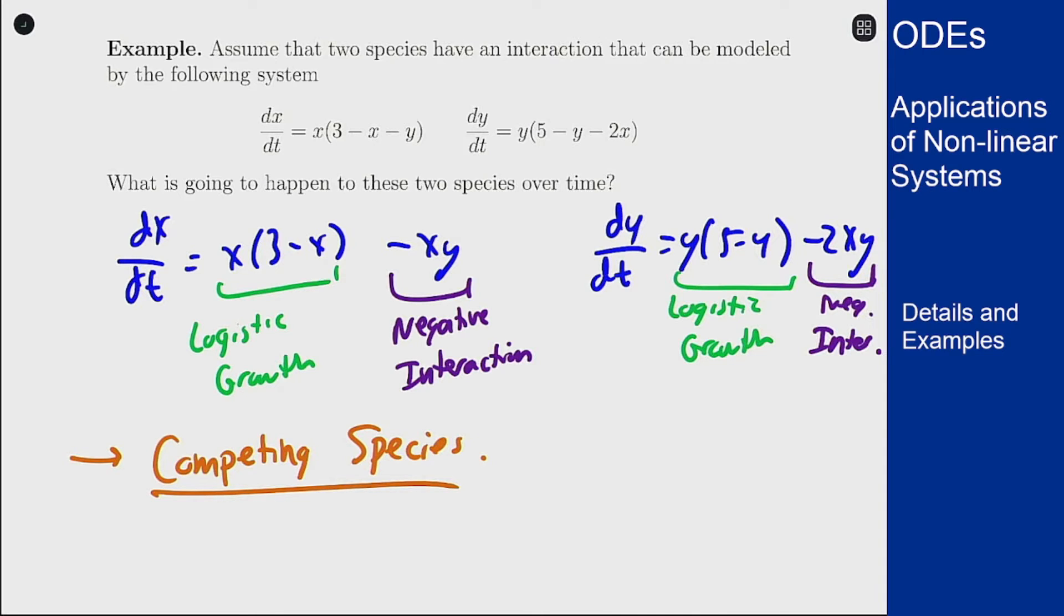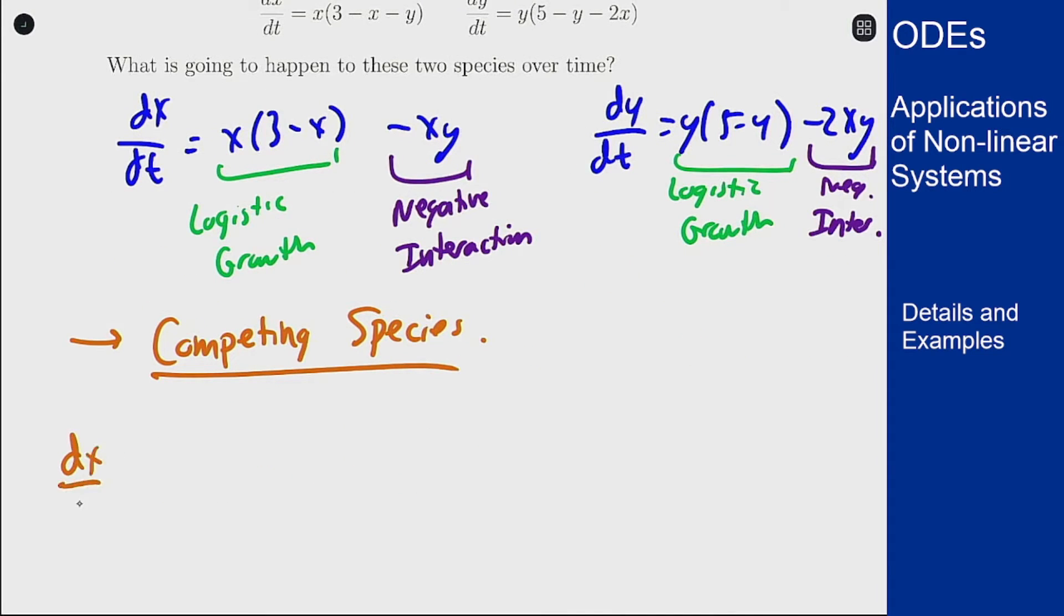Now let's first analyze this to be equilibrium solutions, see what that looks like, and then look at null clines, put it all together. So we can start by setting both these derivative equations equal to 0. We'll have dx/dt equals 0 which is x times 3 minus x minus y and we have dy/dt equals 0 which is y times 5 minus y minus 2x.